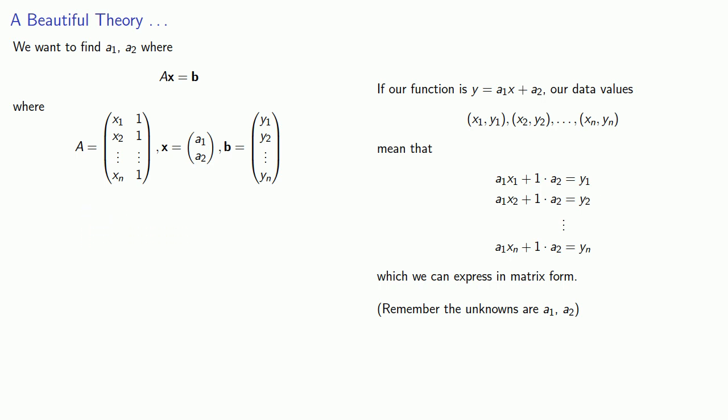And so this seems to be a fairly simple matrix equation. We want to find a1, a2, where Ax equals b. Unfortunately, this is generally impossible. We have too many equations and not enough unknowns.